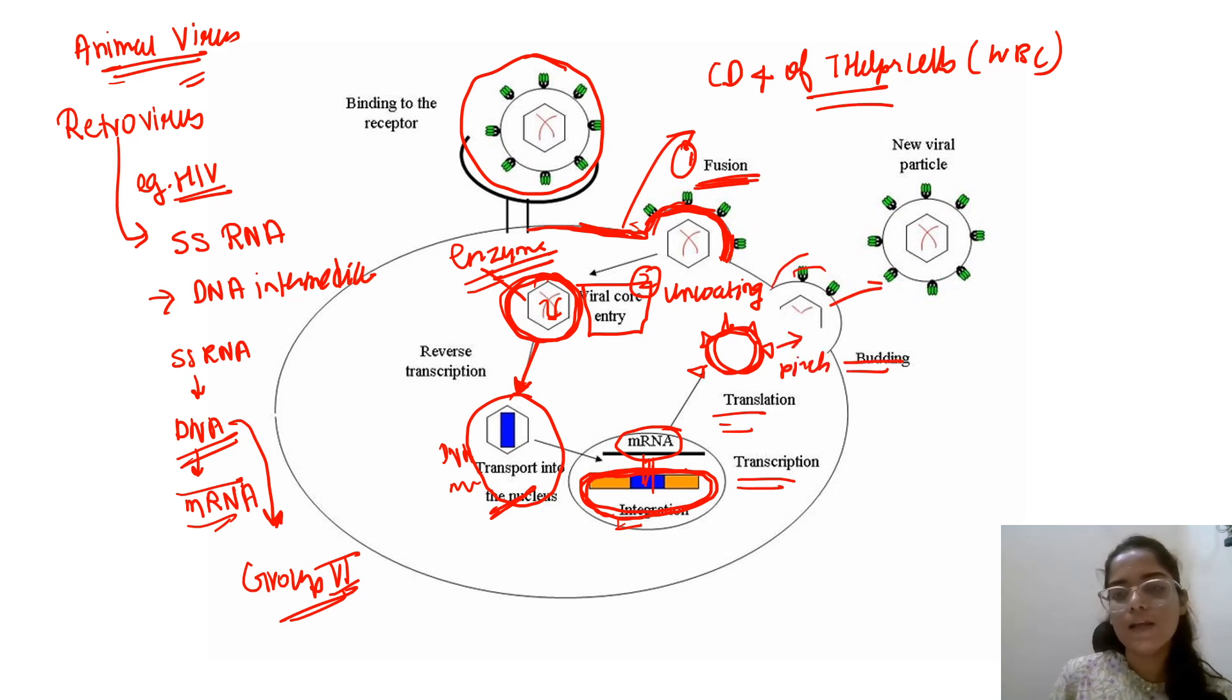It will be released out of the cell. So finally, we will get a new viral particle. This is the life cycle of an animal virus, that is retrovirus.